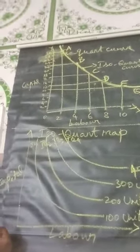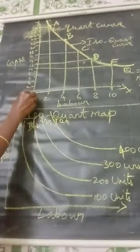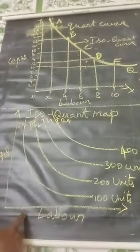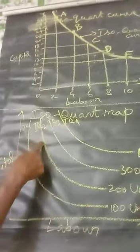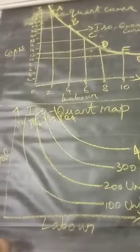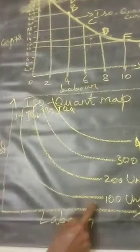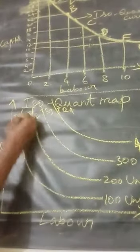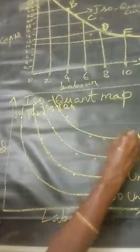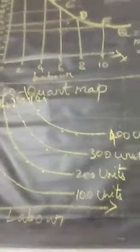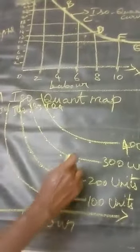Iso-quant map has different iso-quant curves representing the different combinations of factors of production. Now this diagram here is a group of iso-quant curves yielding the same level of output.